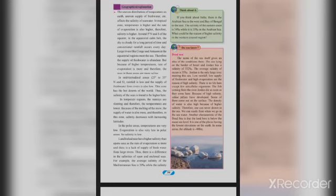The Dead Sea — the name itself gives an idea of the conditions there. The sea lying on the border of Israel and Jordan has a salinity of 332‰, while the average salinity of the ocean is 35‰. The Jordan is the only large river meeting the sea. Low rainfall, low supply of fresh water, and high evaporation are the reasons for this high salinity.